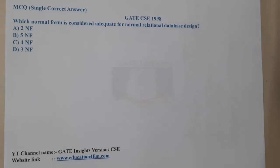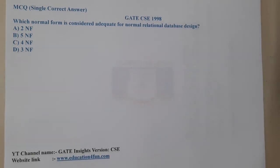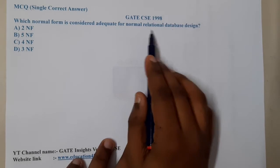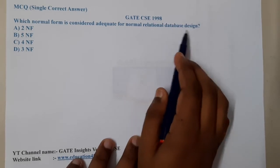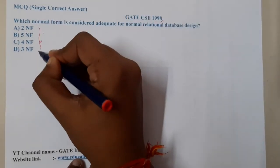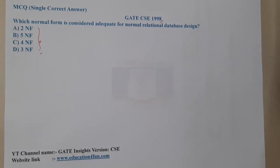Hello guys, we are back with the next lecture. This question belongs to GATE CSC 1998. The given question is: which normal form is considered adequate for normal relational database design? Among these four options, which is the standard or industry standard?